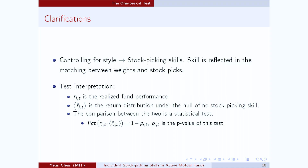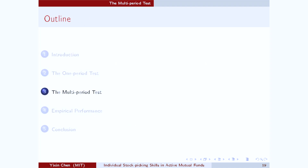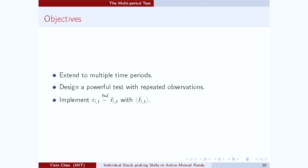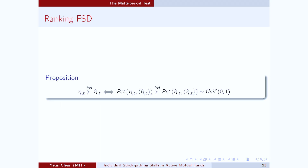So far, everything happens in a single period. But in the data, for each investor, we also observe a time series. The next question is: how are we supposed to leverage the repeated observations in the data to construct an even more powerful test? Suppose we have an investor who is totally unskilled. Then his rankings compared to monkeys should follow a standard IID uniform distribution over time, because this investor is unskilled so he's no different from a monkey — he has equal likelihood to show up at any part of the distribution.